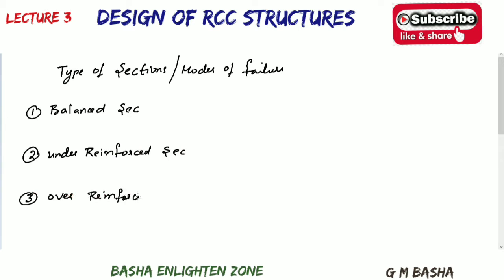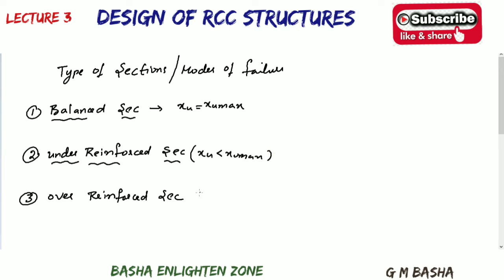For a balanced section, the maximum strains in steel and concrete reach their maximum values simultaneously. Simply remember: XU equals XU maximum. For under-reinforced section, XU is less than XU maximum, and for over-reinforced section, XU is greater than XU maximum.